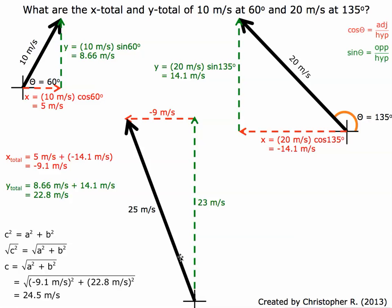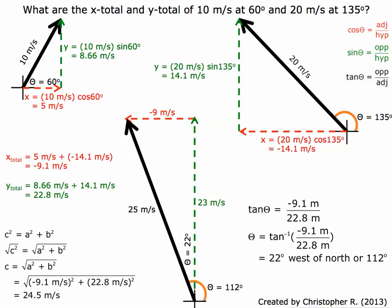What is this angle? There's a couple different ways you can do this. We're going to use the tan function. Tan equals opposite over adjacent. So there's the opposite, it's 9.1 meters per second, and adjacent is 22.8. The angle is 22 west of north.